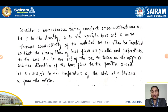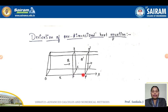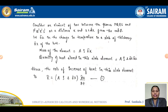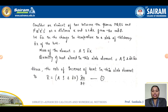Let u = u(x, t) be the temperature of the slab at distance x from the origin. Consider an element of the bar between the planes PQRS and P'Q'R'S', at distances x and x + delta x from the origin O.